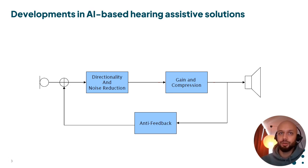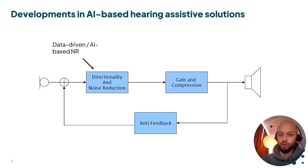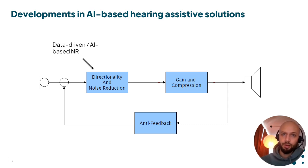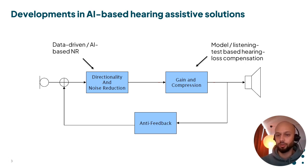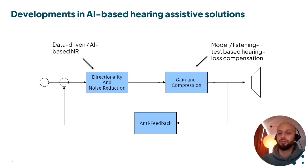In the last few years, there has been a huge development in DNN based noise reduction algorithms that often perform much better than the classical signal processing counterparts. On the other hand, there has not really been a similar development of hearing loss compensation systems. These systems are still based on classic quasi-linear or compressive systems, which are not very expressive and therefore might not adequately compensate for the perceptual deficits of a hearing loss.